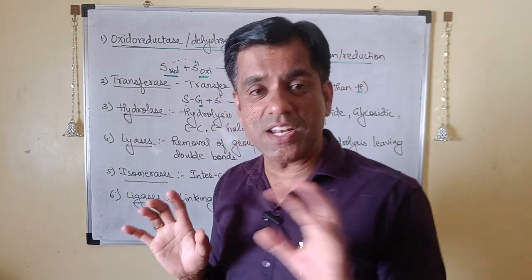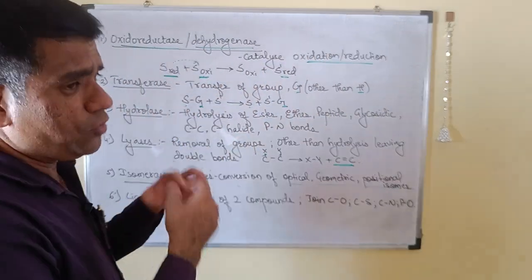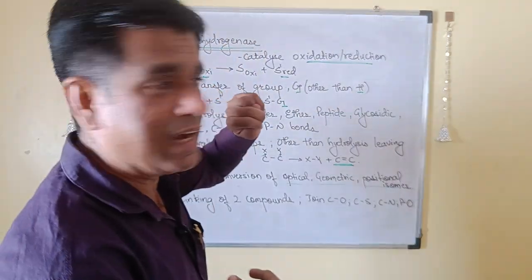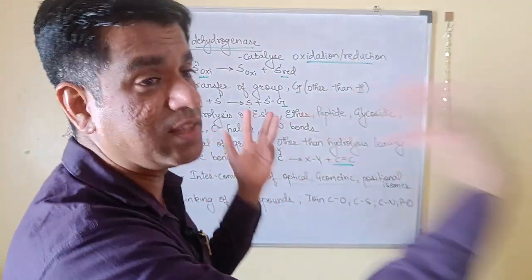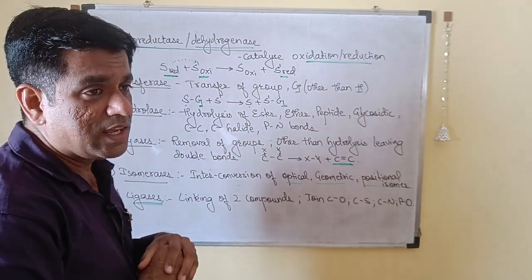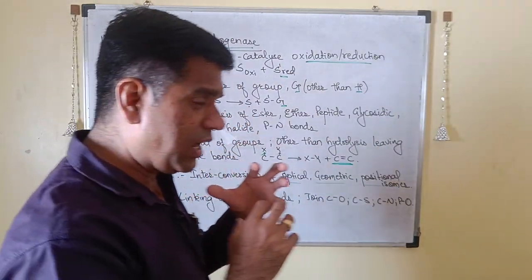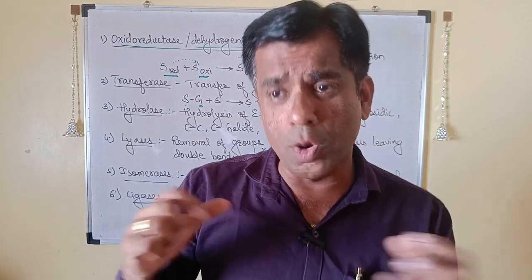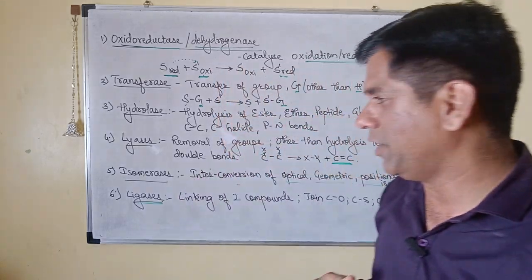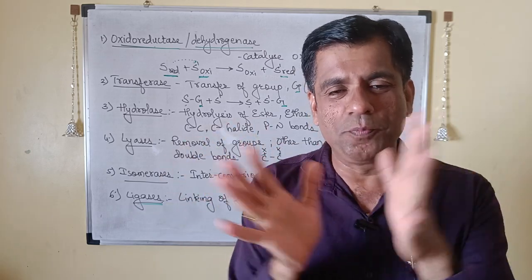If you are transferring hydrogen and electron, catalyzing oxidation reduction, then it is oxidoreductase or dehydrogenase. If you are catalyzing transfer of any other group, then it is transferase. If you are breaking the bond by adding water, then it is hydrolase. If you are removing the groups, introducing double bonds other than hydrolysis, it is lyase. If you are catalyzing isomerization, optical, geometric or positional, then that is isomerase. And if you are joining the bonds, then that is what is called as your ligase. So a brief overview about these six classes.